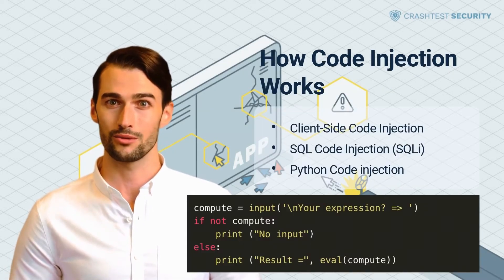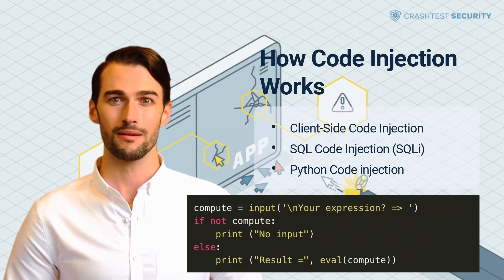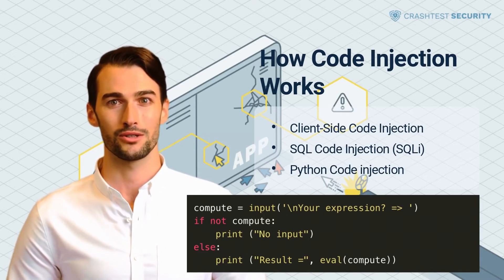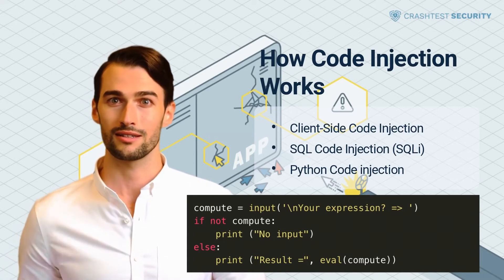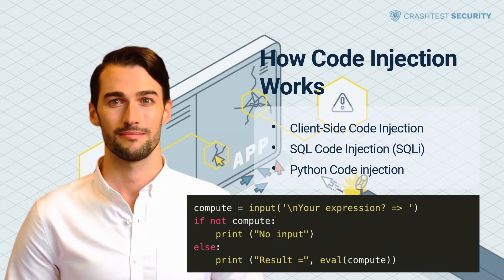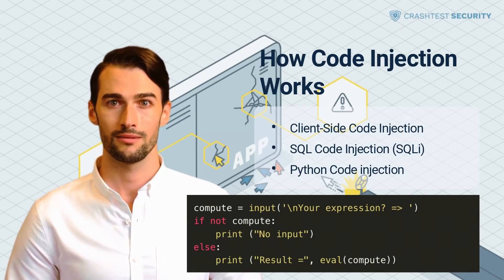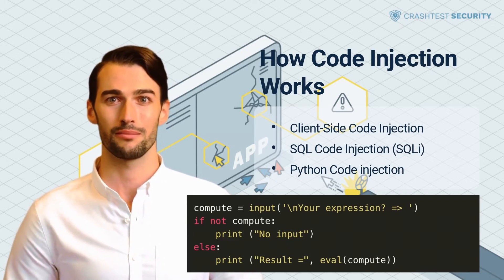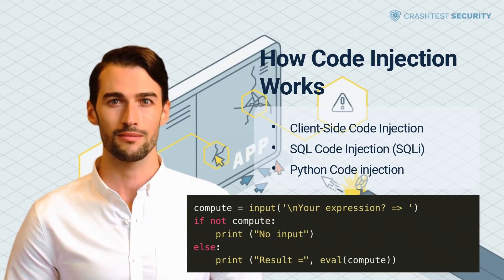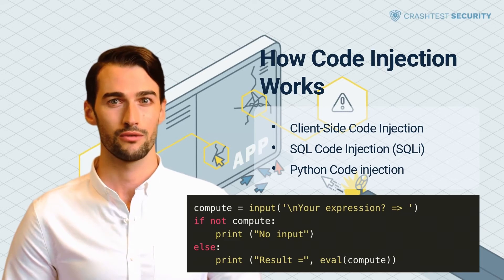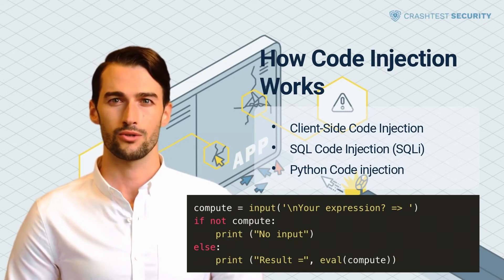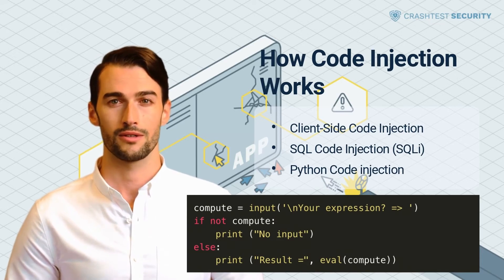Code injection, also known as remote code execution or code evaluation, involves modifying an executable or script containing malicious code. Hackers first probe the application for attack surfaces that can accept untrusted data, including direct inputs such as file uploads, form fields, or other data sources such as cookies and query string parameters. The introduction of code typically consists of a direct concatenation of a character string — the PHP eval function or its equivalent in another language. A successful exploit grants attackers access to the application's server-side interpreter, allowing them to run commands on the server for deeper exploitation.